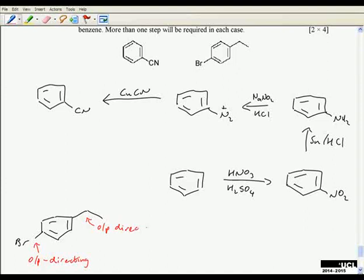Perhaps we would start by saying that the bromine is an ortho-para-directing substituent, and in fact the ethyl group is also an ortho-para-directing substituent, and we want them para to each other. So it's all looking good. But you remember we can't do Friedel-Crafts alkylation very efficiently, particularly with primary alkyl halides.